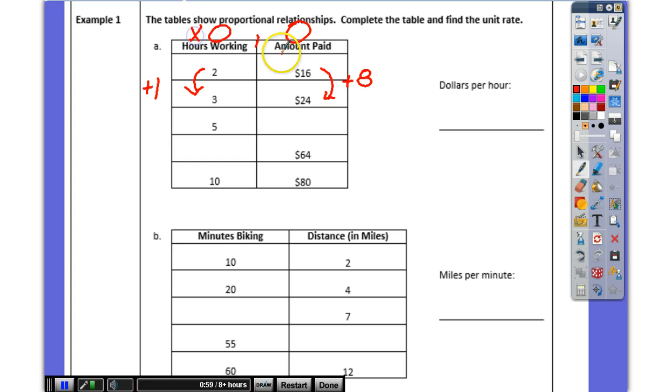These are my x's. These are my y's. So is it 8 over 1 or 1 over 8? 8 over 1. Because it's y over x. So 8 over 1 simplified equals 8. So what do we have? We have $8 per 1 hour.